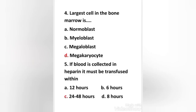Next question: the largest cell in the bone marrow is normoblast, myeloblast, megaloblast, or megakaryocyte? The right answer is option D: megakaryocyte. A megakaryocyte is a large bone marrow cell with a lobated nucleus, responsible for the production of blood thrombocytes, which are necessary for normal blood clotting.